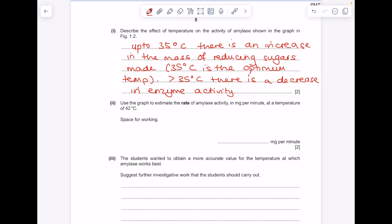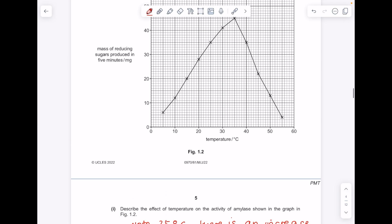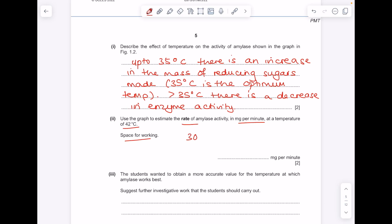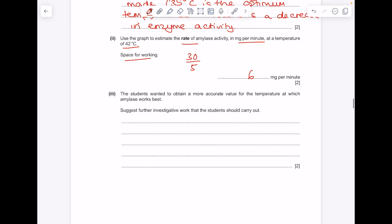Use the graph to estimate the rate of amylase activity in milligrams per minute at temperature 42 degrees. So use your graph line to read the mass, which is 30 milligrams, but notice that was made in 5 minutes. They want a rate in terms of per minute, so do 30 divided by 5 to get an answer of 6 milligrams per minute.